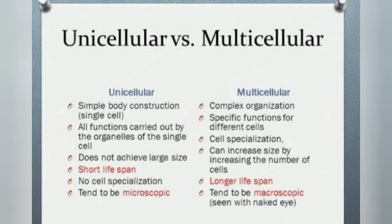In multicellular organisms, as they have multiple cells, the functions are divided among different cells and cell specialization is found. In unicellular organisms, no cell specialization is found.